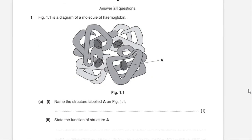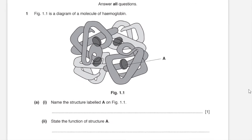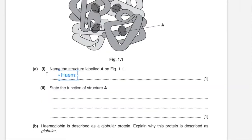Question 1, figure 1.1 is a diagram of a molecule of hemoglobin. A1: name the structure labeled A on the figure. So A is a hemoglobin molecule where the shaded and unshaded structures would be polypeptides, since there are four of them. Since the structure labeled A is not part of that polypeptide, it would be the heme group of the molecule. To state the function of structure A: the heme group carries iron, which binds with oxygen to form oxyhemoglobin to transport oxygen.